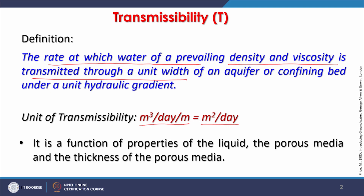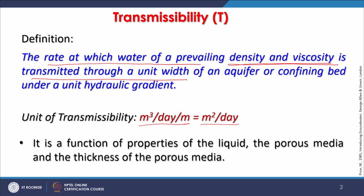Transmissibility is a function of three things: the properties of the liquid — since the definition considers prevailing density and viscosity — the porous media through which water flows, and the thickness of that porous media, which may be the aquifer thickness.